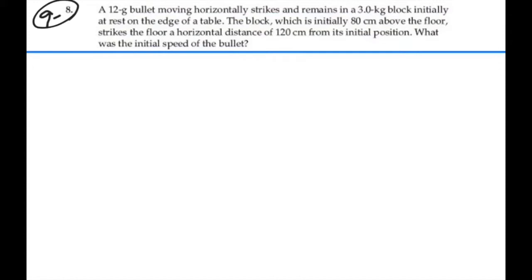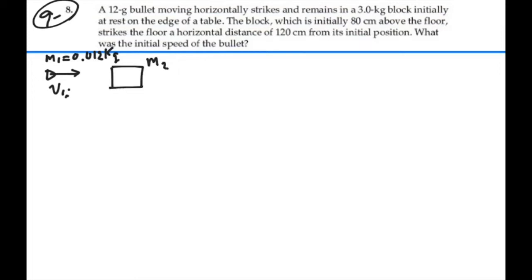So we have a bullet — let's call that mass 1. It's equal to 12 grams, which is 0.012 kilograms. It's flying with some initial speed that we wish to find. And it's going to hit a block — let's call that mass 2, which is 3 kilograms. That has an initial velocity of 0.